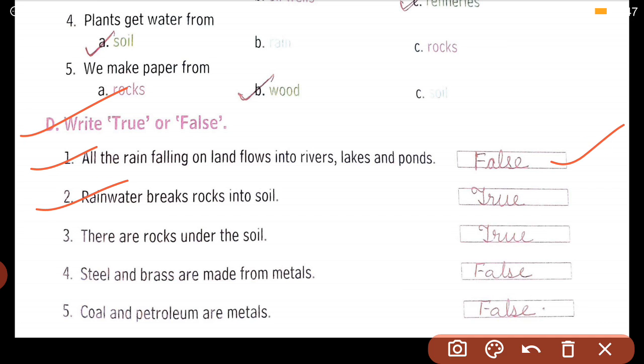Second, rainwater breaks rocks into soil. It is true because of this only soil is formed. There are rocks under the soil. It is true. Steel and brass are made from metals. Yes, it is true.